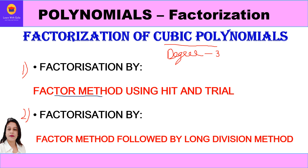In the first method, we are going to use the factor method by hit and trial — finding the zeros of the polynomial using hit and trial. In the second method, we use the factor method only for finding one zero, then apply long division method. If we get a quadratic equation, we also use the splitting the middle term method.